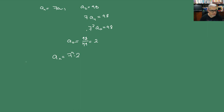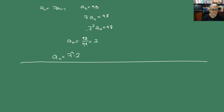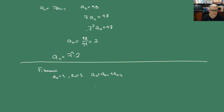¿Qué pasa con las relaciones de recurrencia que ya no son de primer orden, sino de segundo orden? Una de esas muy famosas es la de Fibonacci. Si se acuerdan, la de Fibonacci es de la forma: A₀ = 1, A₁ = 1, y Aₙ = Aₙ₋₁ + Aₙ₋₂. Sumamos los dos anteriores. En ese sentido, la de Fibonacci es una recursión de segundo orden, porque depende de dos términos anteriores.